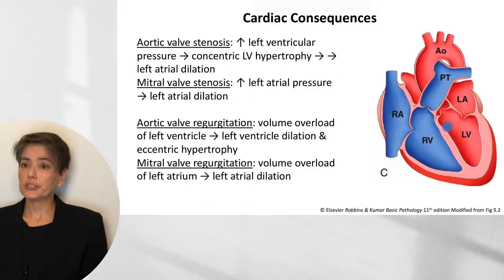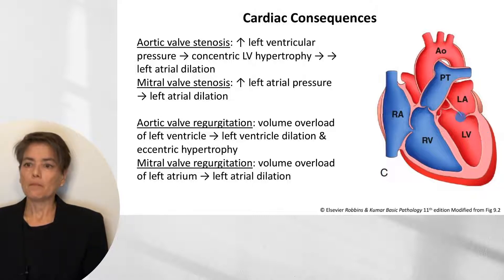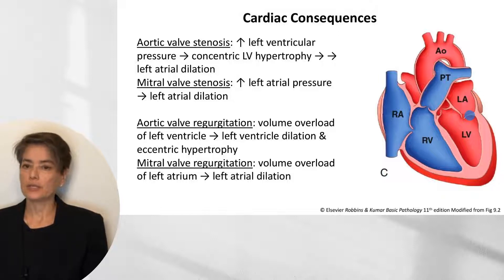When we talk about regurgitation, with aortic valve regurgitation, we get blood from the aorta backflowing into the left ventricle, leading to a volume overload which causes left ventricular dilation and then compensatory eccentric hypertrophy. With mitral valve regurgitation, we get volume overload of the left atrium as blood from the left ventricle flows back into the left atrium, which can again lead to left atrial dilation.